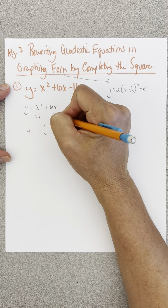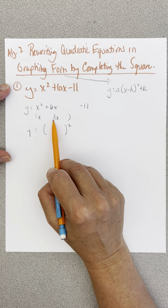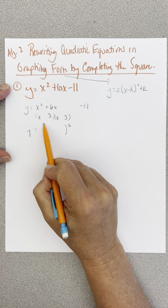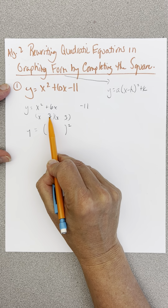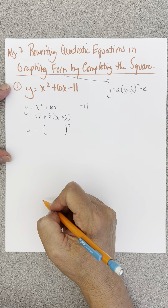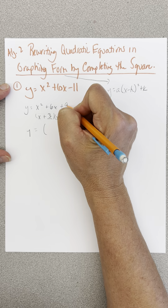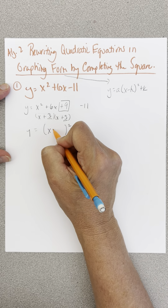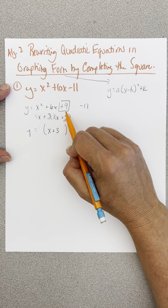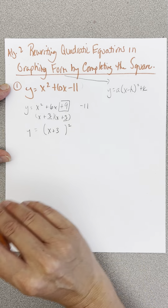Factors of x would be x and x. The outside and inside terms have to be the same and must add to 6 — that would be 3 and 3, because 3x plus 3x is 6x. That's 6 with pluses. So 3 times 3 is 9. I have to add 9 to complete my square to make this x plus 3 squared. But if I add 9 here, I have changed my equation — I've added 9.